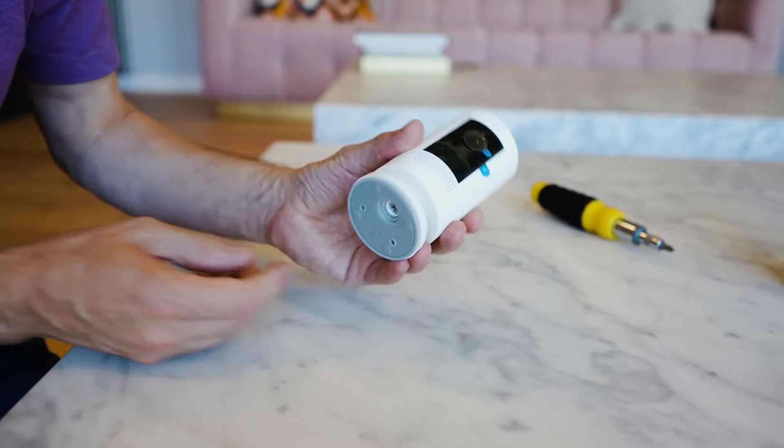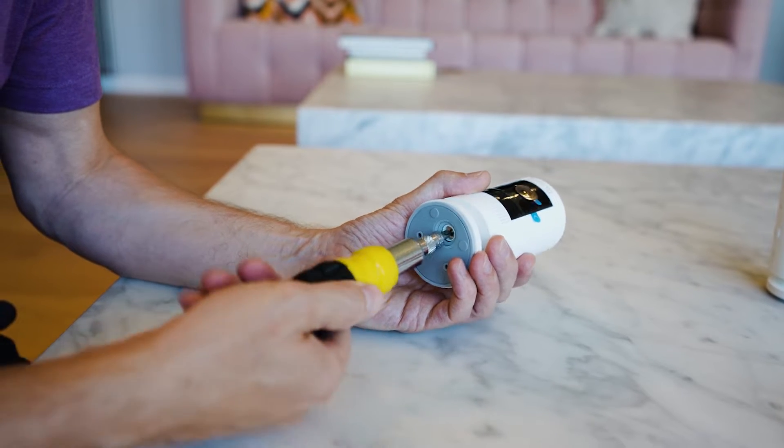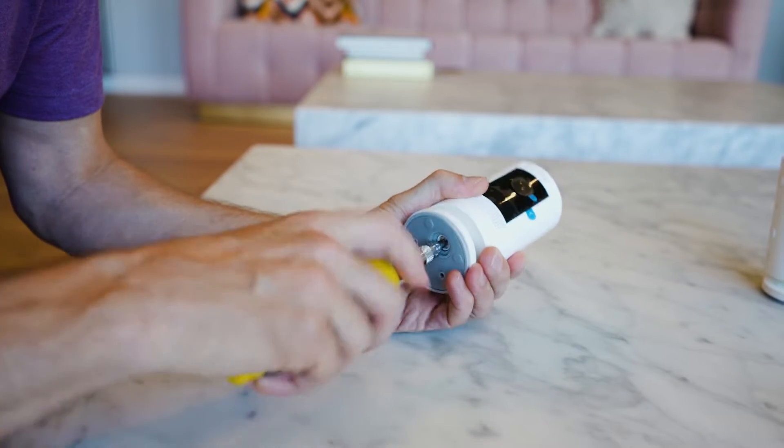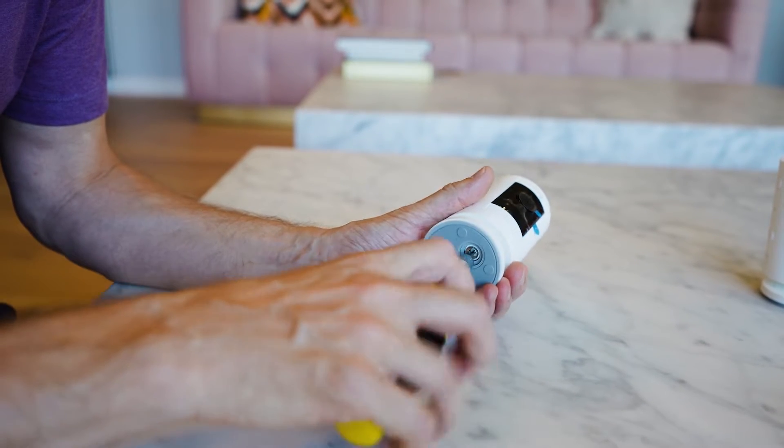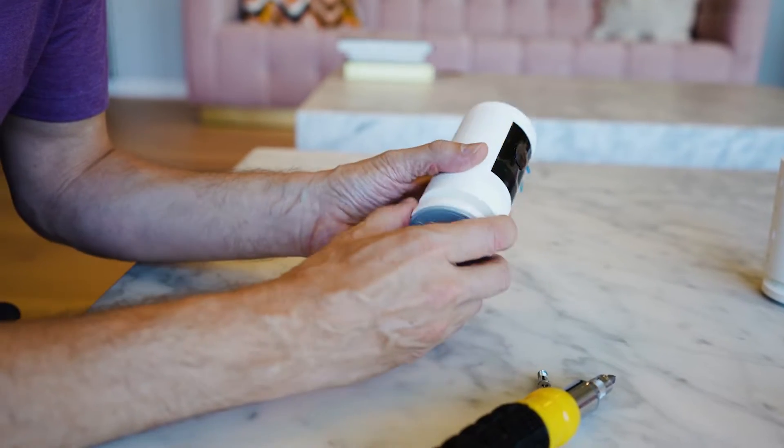So this has a base that comes off and you can mount this to a wall. You can also mount it on a tabletop. You could screw it in if you want to. So what you do is you take off this base just with a Phillips screwdriver. It comes off like so.